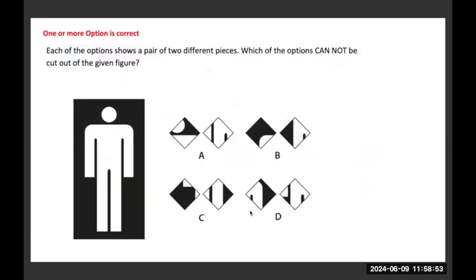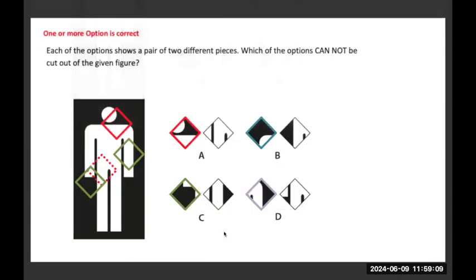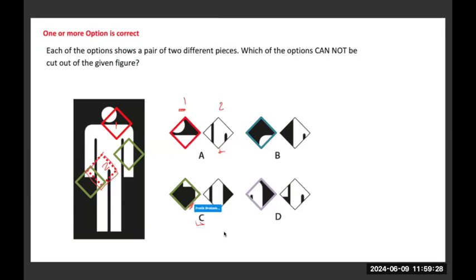Each of the options shows a pair of two different pieces. Which of the options cannot be cut out from the given figure? I first highlighted options A and C. The first part of A happens here and the second part of A happens here. The third part — C's part — is happening here. So A and C are possible, and we leave those out.